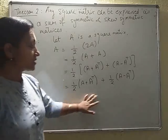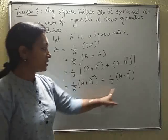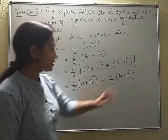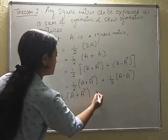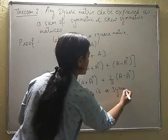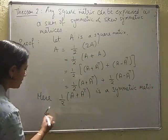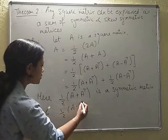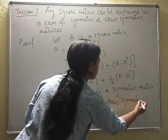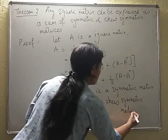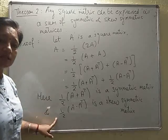So A is expressed as a sum of two matrices. And if you go by the previous theorem, we know A plus A transpose is symmetric and A minus A transpose is skew-symmetric. So here, one-half of A plus A transpose is a symmetric matrix, and half of A minus A transpose is a skew-symmetric matrix. So you can see any square matrix can be expressed as a sum of a symmetric and a skew-symmetric matrix.